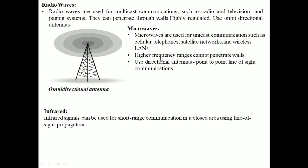Microwaves use directional antennas with point-to-point line of sight communications. Infrared signals can be used for short range communications in a closed area using line of sight propagation. This covers the topic of wireless transmission media, or unguided transmission media.